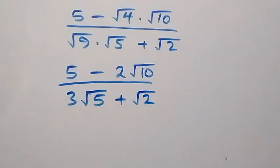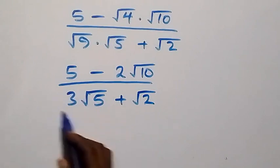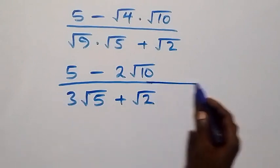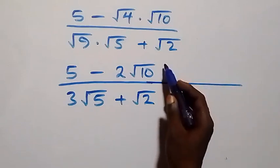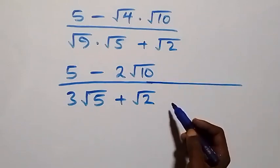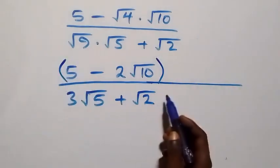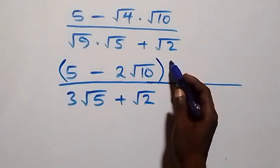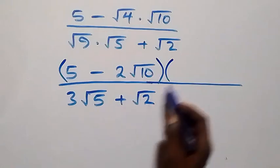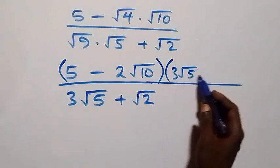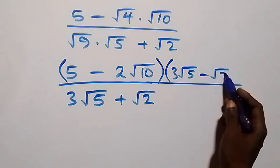Now we rationalize this expression by multiplying by the conjugate of the denominator. We multiply and divide by the conjugate, which is three root five minus root two.